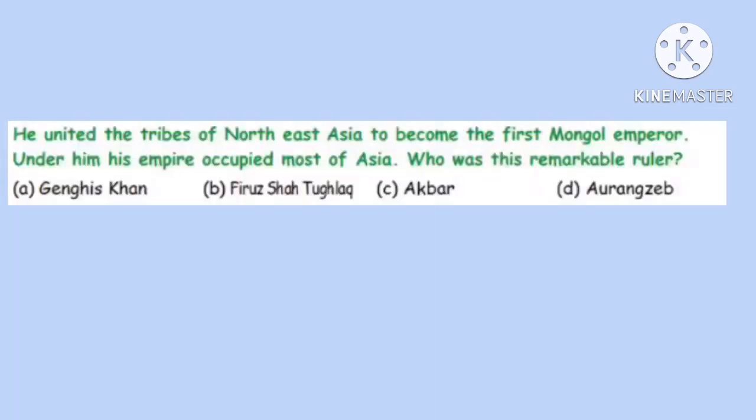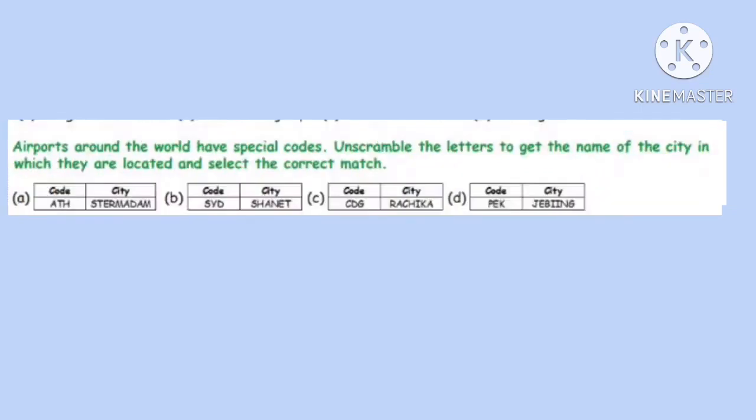Question 7. He united the tribes of North East Asia to become the first Mongol emperor. Under him, his empire occupied most of Asia. Who was this remarkable ruler? Correct option is A: Genghis Khan.